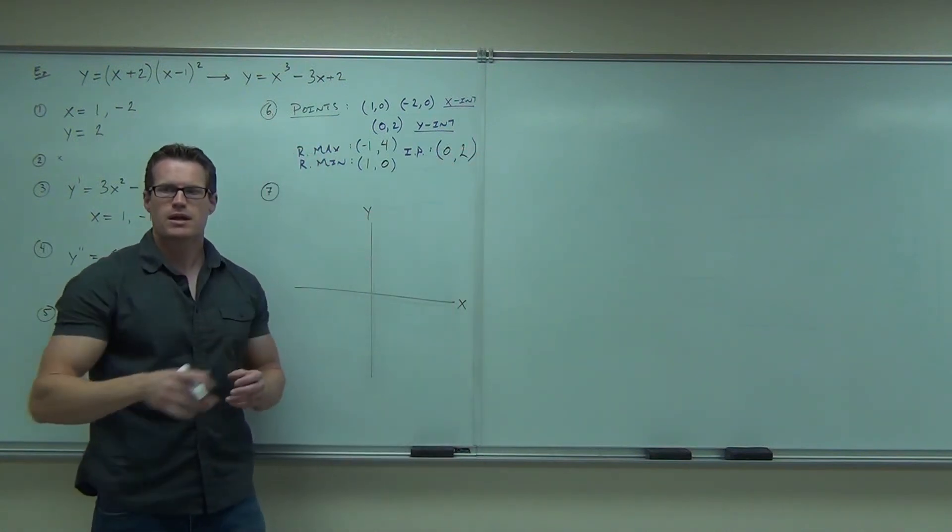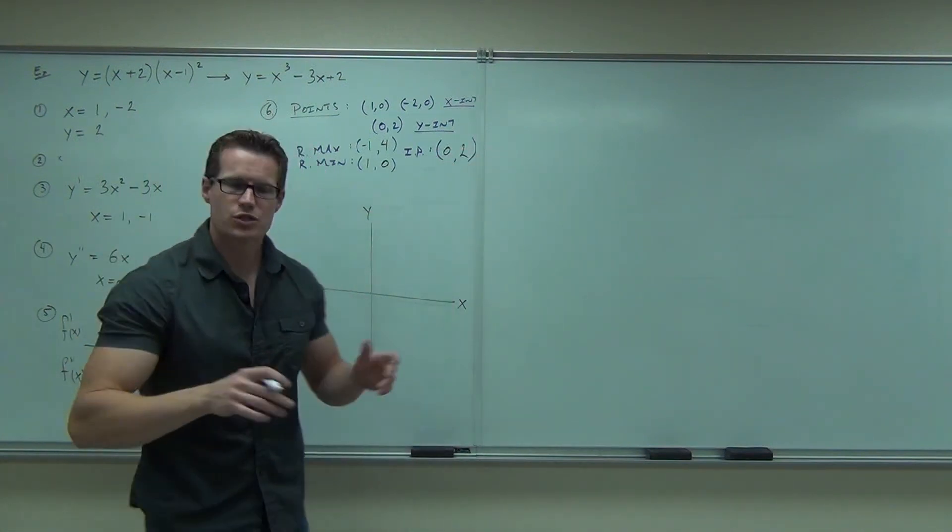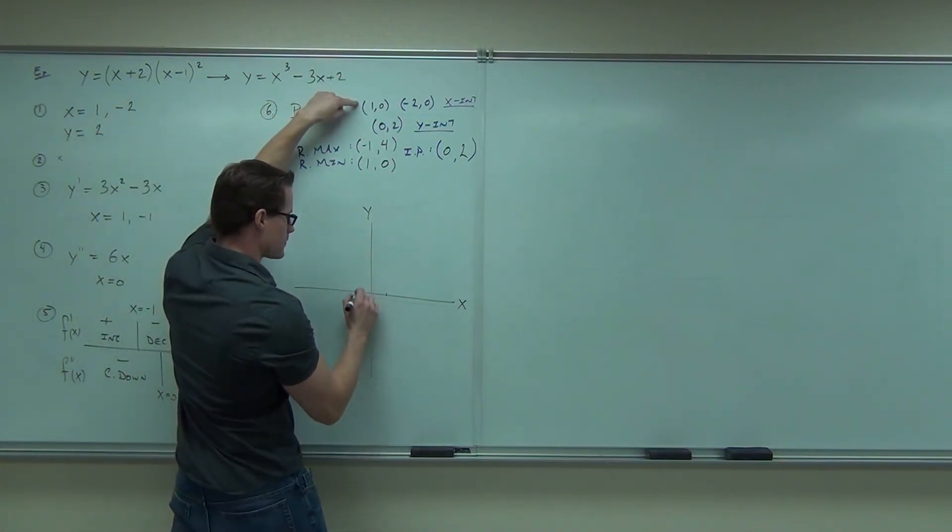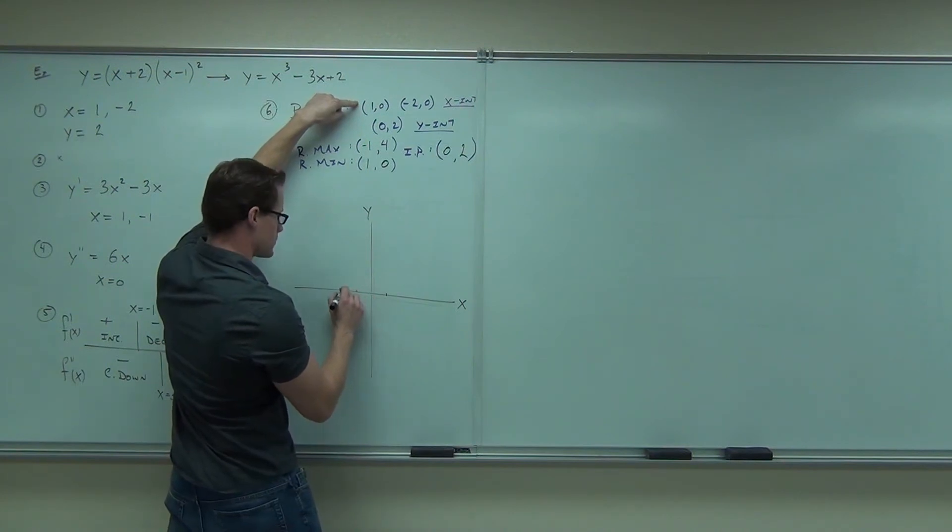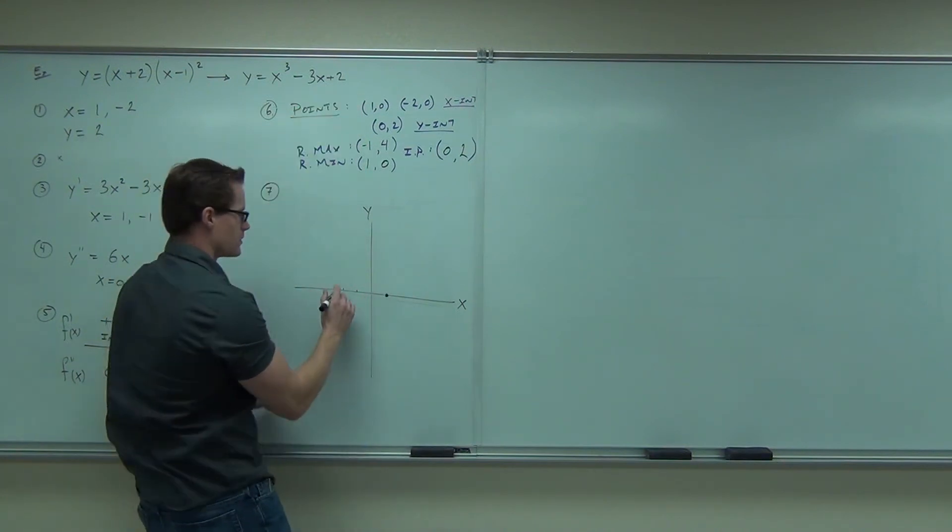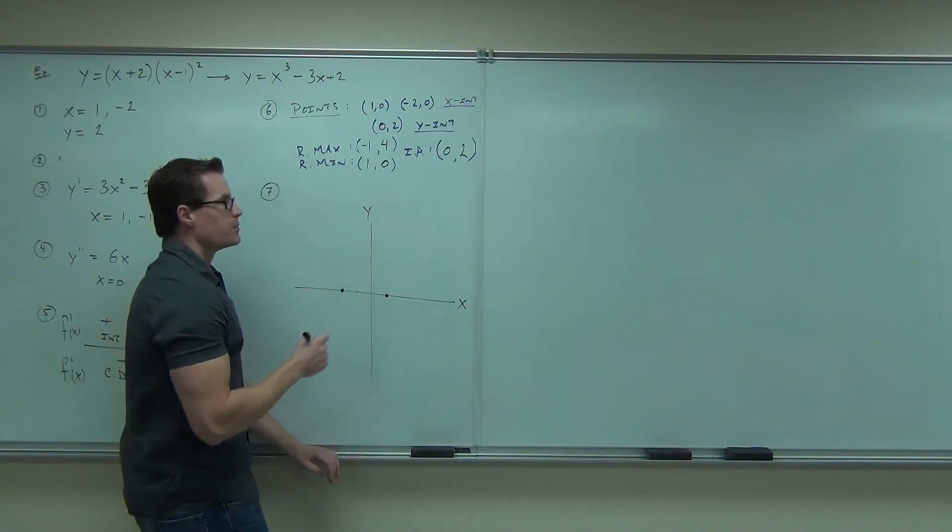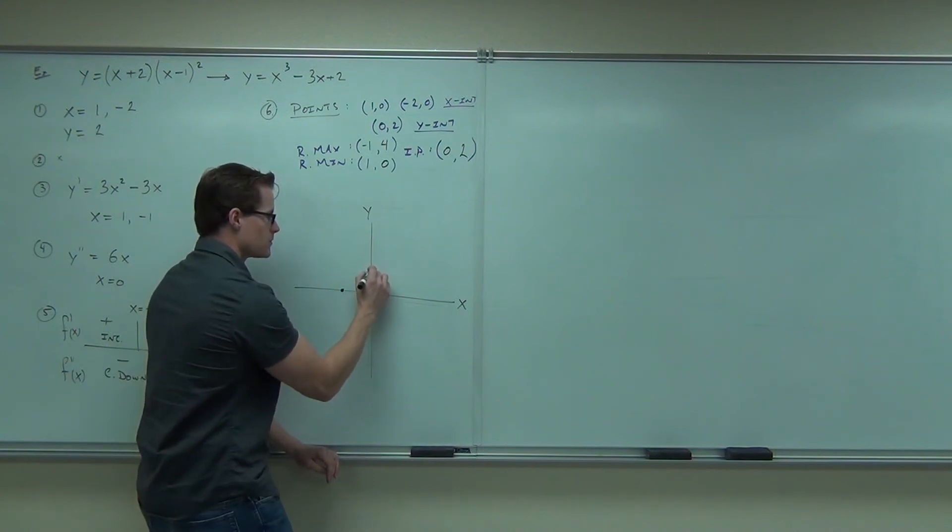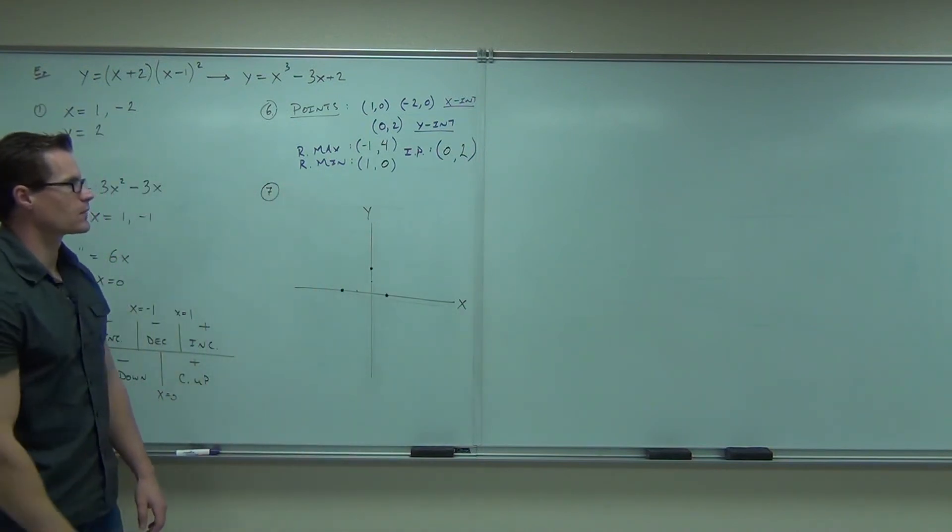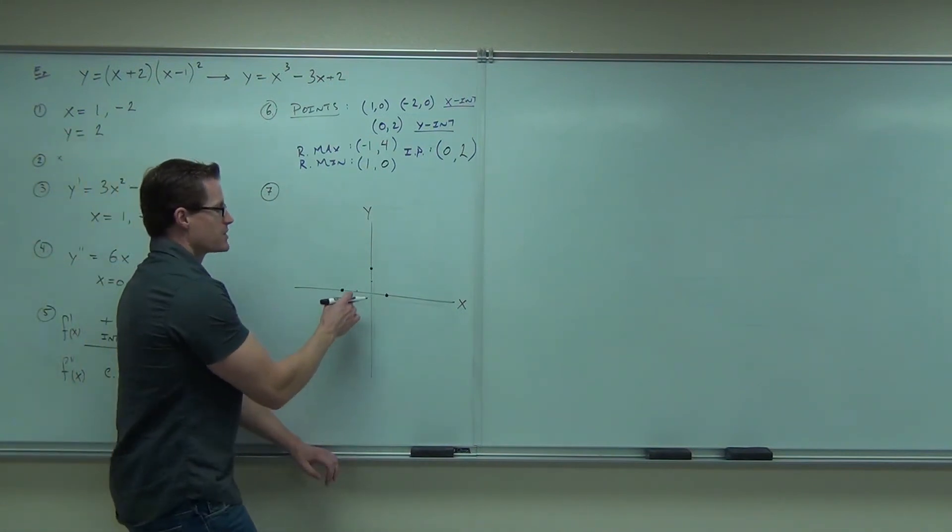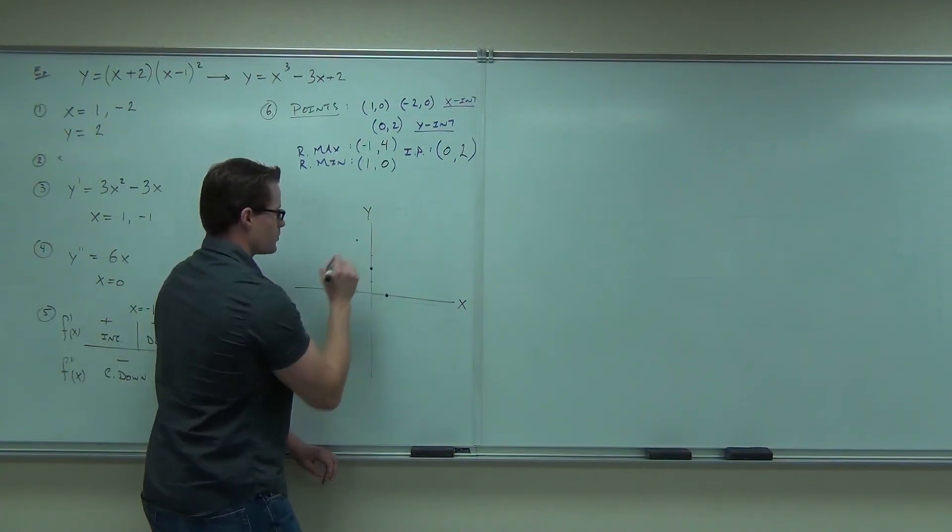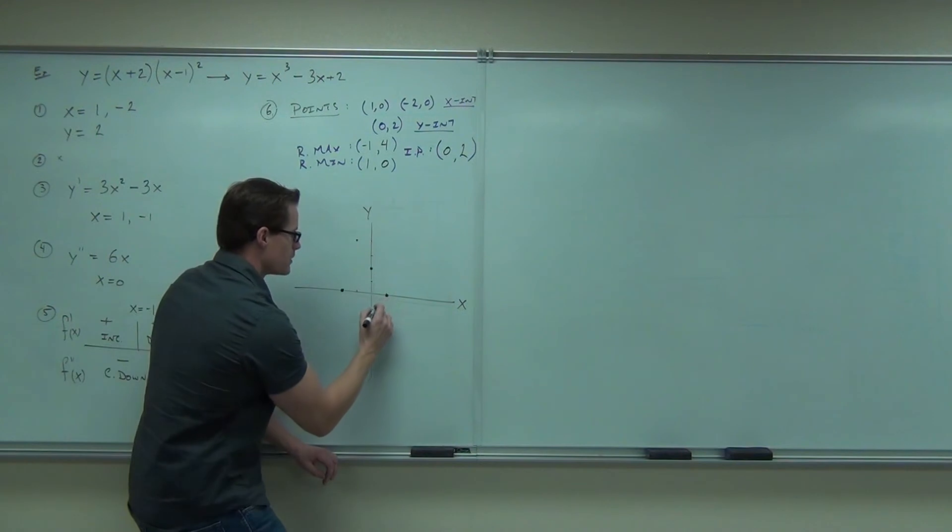Do you feel okay with the points? Here's how to label them on your graph. What you're going to do is just work your way down, just like we did in the process. Start with your x-intercepts. 1, 0, put a point. Negative 2, 0, put a point. Those are my x-intercepts. My y-intercept is 0, 2, put a point. Relative max happens at negative 1, 4. Put a point. Relative min happens at 1, 0. That's already there.